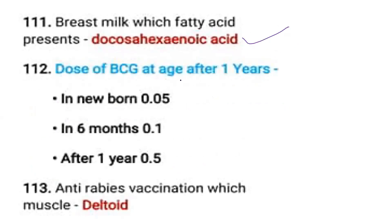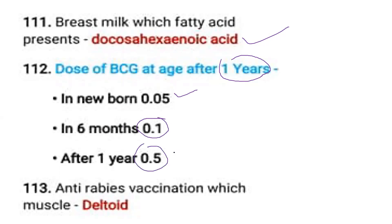BCG vaccine dosage by age: newborn — 0.05 ml; 6 months — 0.1 ml; after one year — 0.5 ml, given subcutaneously. This is a very important fact to remember.